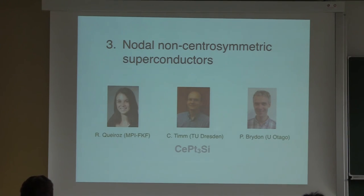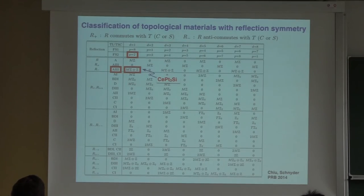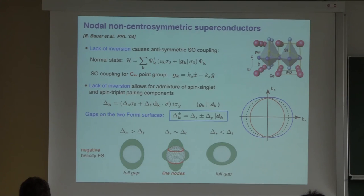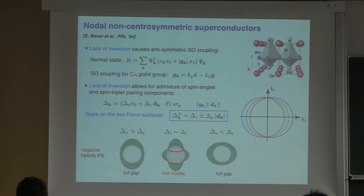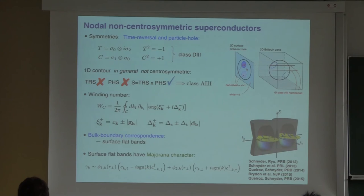Let me say a few words about the superconductors — this will be discussed in more detail by Raquel on Wednesday. These are so-called non-centrosymmetric superconductors, where you have a splitting of bands in the bulk and two different gaps on these two bands, which can be viewed as the sum and difference of singlet and triplet pairing. You can generically have so-called nodal rings in these superconductors, protected by a topological invariant. Similar to the Berry phase discussed in the context of calcium-3 phosphorus-2, you have surface states bounded by the projection of these rings in the bulk.